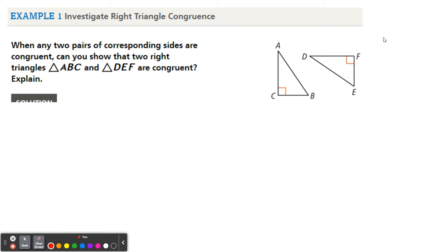All right, so investigation here. When any two pairs of corresponding sides are congruent, can you show that two right triangles ABC and DEF are congruent? All right, so there's actually two situations here.